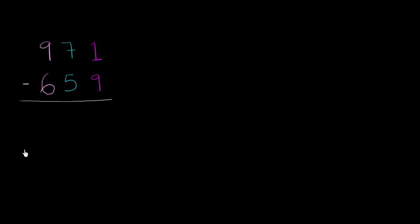Let's try to subtract 659 from 971. And as soon as you start trying to do it, you face a problem. You go to the ones place and you say, how am I going to subtract a 9 from a 1? And the answer lies in regrouping, taking value from one of the other places here and giving it to the ones place.